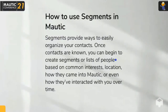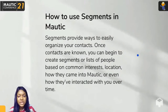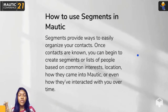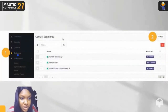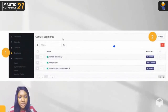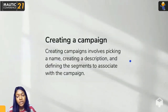The next important feature is segments. Segments provide a way to easily manage your contacts. Once your contacts are known, you can create segments or lists of people based on their common interests, location, how they came to Mautic, or how they've interacted with you. Segments keep things organized so you know which contacts are where. To use segments, click New on the right-hand side of the software.